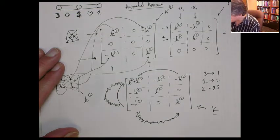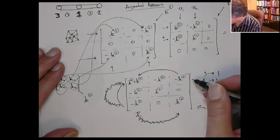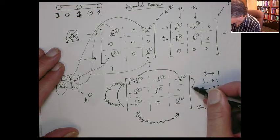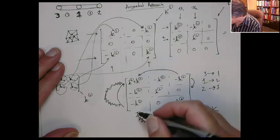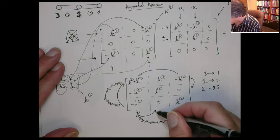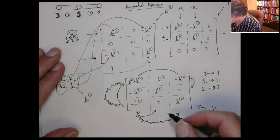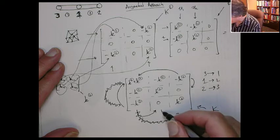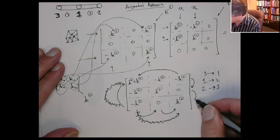And then one goes to two, so we're going to take row one and put it here, and column one and put it here. And then finally two goes to three, so this goes here and this goes here.